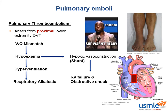Unlike other areas of the body, pulmonary infarction rarely happens even if a branch is completely occluded, because the lung parenchyma has additional blood supply from the bronchial blood vessels, which branch off of the aorta. But if the lungs do get infarcted, it is a hemorrhagic infarct, which can cause hemoptysis, or can irritate the nearby pleura and cause pleuritic chest pain, which is worse with inspiration.